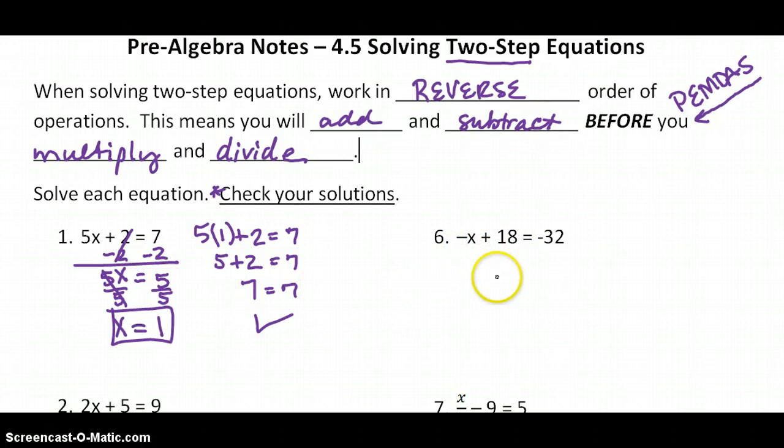Number 6. Come over to the right here. We have a negative x. I want to show you what to do with a negative x. But before we take care of our negative, we've got it added to 18. So we need to undo the addition by subtracting 18 from both sides. 18 cancels with 18. And we have negative x equals a negative 50.